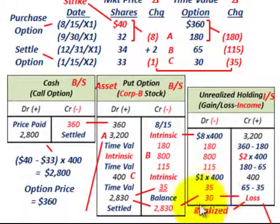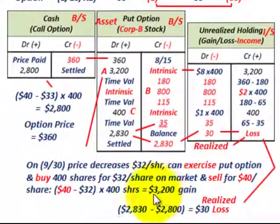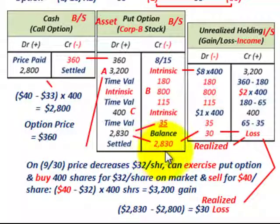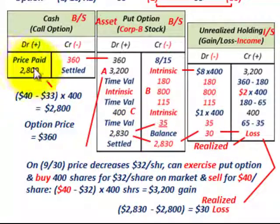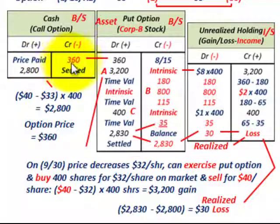So that is a realized loss — simply the $2,830 put option amount subtracting the $2,800 cash receipts gives us a realized loss of $30. Now, really looking at what we show as this loss — it was actually a pretty good deal, because we received $2,800 in cash on this put option and we only paid $360 for the option.